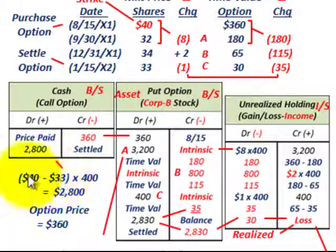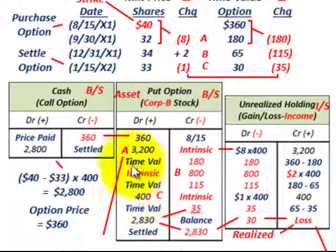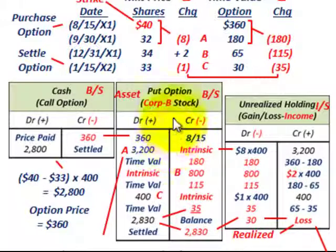You have to look at the cash received based on the strike price versus the lower market price — the difference times the number of shares you have the option on. In this case, that gave us a gain of $2,800. Then you had to balance that gain with whatever's sitting in your put option account to determine the realized gain or loss — in this case, it was a realized loss of $30. So that summarizes put options as a derivative instrument used for speculative purposes.